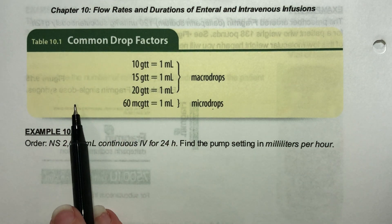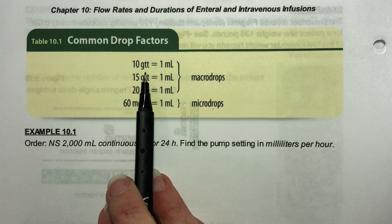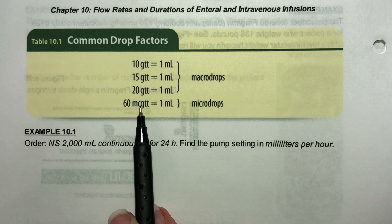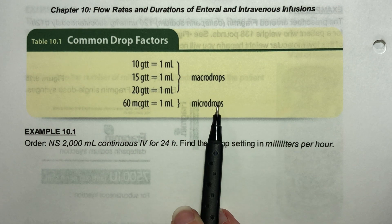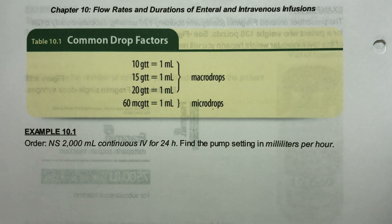Here are some common what we call drop factors. GTT stands for drops. I don't know where the abbreviation came from but we just have to go with it. An MC GTT is considered micro drops. This would be drops per minute, drops per hour, and stuff like that.